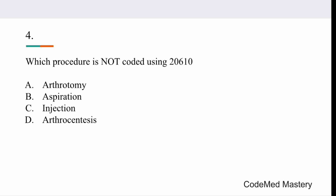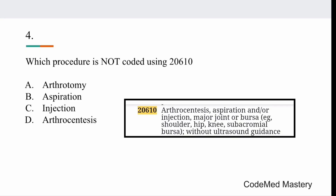Next question: which procedure is not coded using 20610? Option A: arthrotomy. Option B: aspiration. Option C: injection. Option D: arthrocentesis. Code 20610 is for arthrocentesis, aspiration, or injection of a major joint or bursa without ultrasound guidance. The right answer is option A — arthrotomy — because aspiration, injection, and arthrocentesis are exactly what 20610 is used for. Arthrotomy is a surgical opening into a joint, which is a much more invasive procedure.